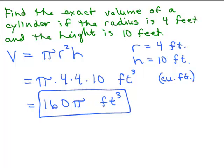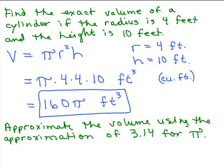So now let's estimate this. Let's approximate the volume using the approximation of 3.14 for π. Now we all know that π does not equal 3.14. That's just a common approximation that we use. If π was 3.14 we wouldn't have a special name for it. We would just plug in 3.14 in the first place.